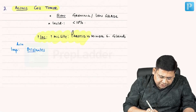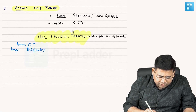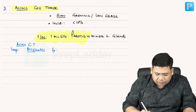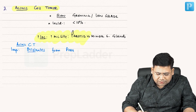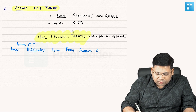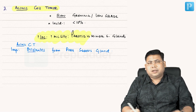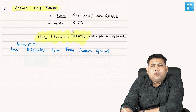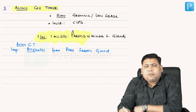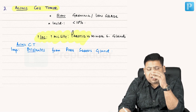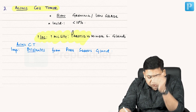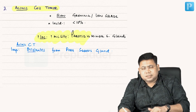Acinic cell tumor. Acinic cell tumor originates from pure serous glands. Now try to understand — it is only, only, only the parotid, and except parotid we have few minor salivary glands which are actually serous.